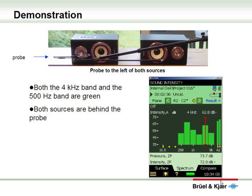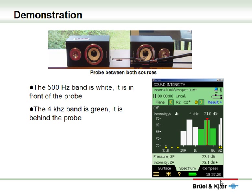Here we've moved the probe all the way to the other side of both loudspeakers. The sound waves must now be passing the probe in a negative direction — from behind. Negative is colored green on the display, and once again the 4 kHz band and the 500 Hz band are both green, meaning both are behind the probe. Next, placing the probe exactly between the two sources: the 500 Hz band is in front and colored white, and the 4 kHz band is behind and colored green. This is a simple proof that a sound intensity measuring system will enable you to see where the sound is coming from — low frequency from the front, high frequency from the rear.